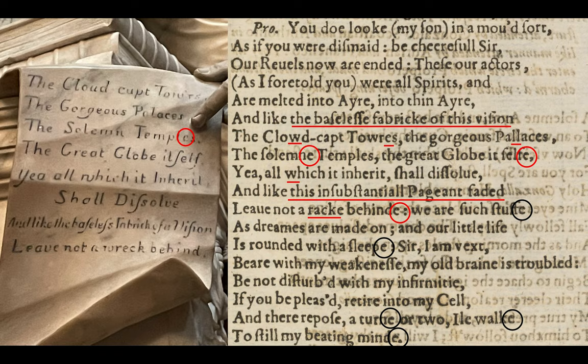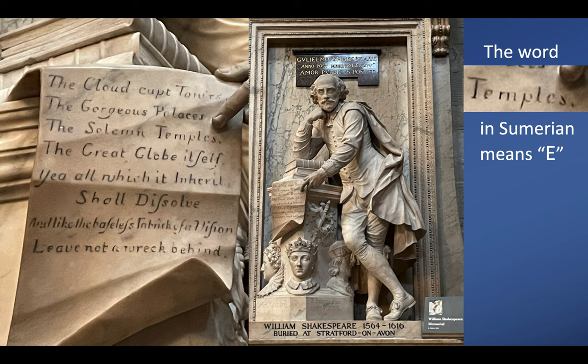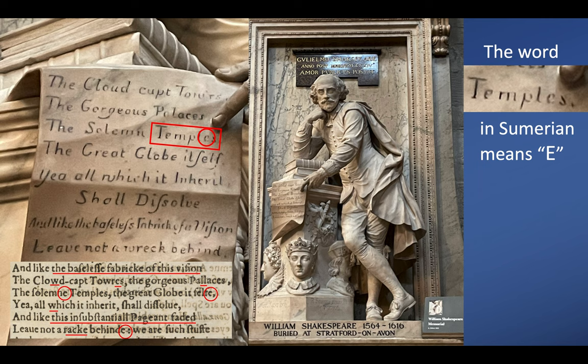If I draw a line through where he is pointing, through those two dots and continue that line, you'll see it goes all the way through to the E of 'leave,' through the double L of 'shall,' and through the H there. To recap: he's pointing to an E; 'temples' in Sumerian means E; comparing it to the First Folio there are differences to do with E's; and the line itself goes to an E on the other side.